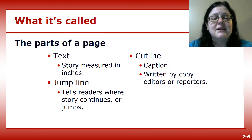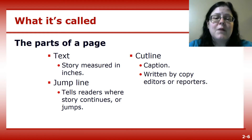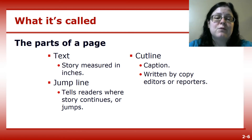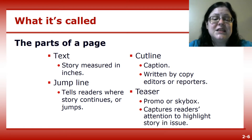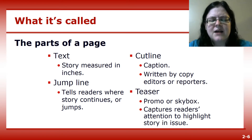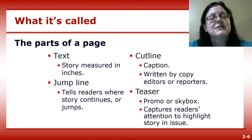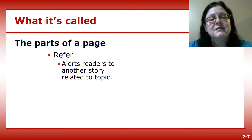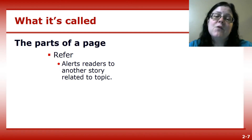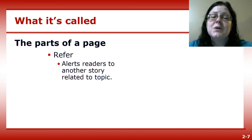A cut line is information about a photo that is collected by photographers, but usually written by reporters or copy editors. It often appears just below the photo. I prefer to call it a caption. And finally, you have a teaser, sometimes also called a promo or a skybox. This is an item at the top of page one designed to grab readers' attention so that they'll pick up and purchase the paper. A refer is information embedded in a story that alerts readers that another story on the topic appears elsewhere in the paper.